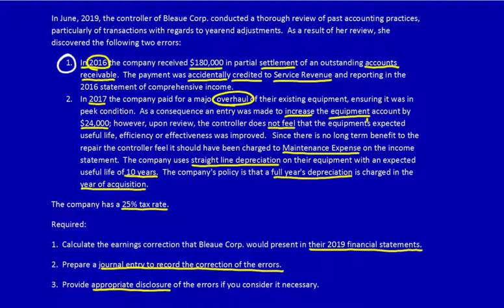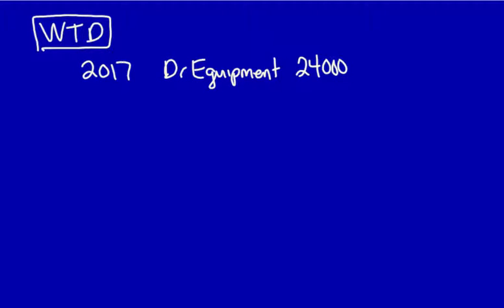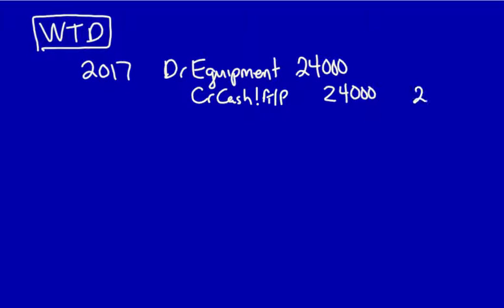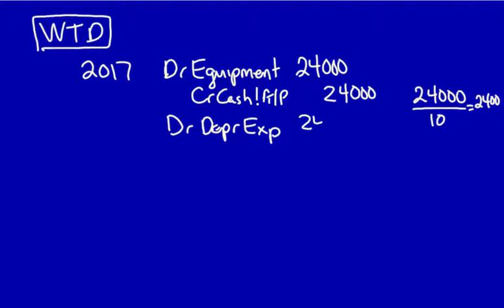The next mistake was in 2017. We know that they put $24,000 in the equipment account. Starting with what they did: in 2017, the company debited their equipment account for $24,000 and must have credited something like cash or accounts payable. The company also takes depreciation on their equipment. We know from the question that the depreciation was over 10 years and they take a full year in the year of acquisition. $24,000 divided by 10 years equals $2,400 every year. The entry: debit depreciation expense $2,400, credit accumulated depreciation $2,400.